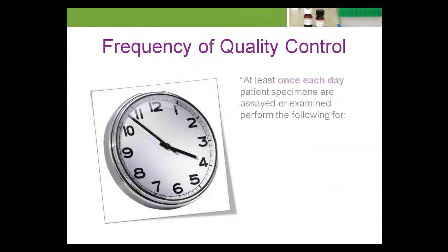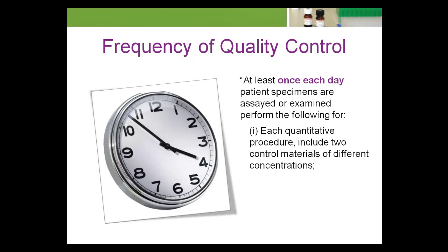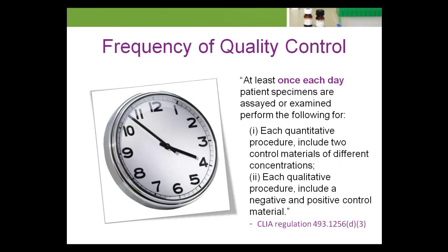Current U.S. regulations mandate the minimum frequency of quality control evaluations in a clinical diagnostic laboratory testing human specimens in terms of time. While there are some exceptions to this regulation, in general, CLIA standards for acceptable QC practice are based on the maximum allowable time interval between QC evaluations. Requiring laboratories that test human specimens to examine at least two QC specimens per day ensures a baseline for diagnostic quality and establishes an upper limit to patient risk — or does it?